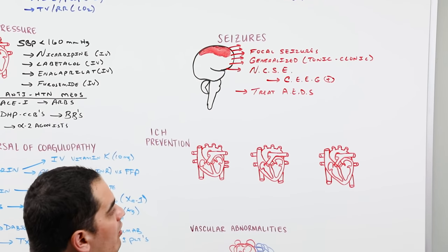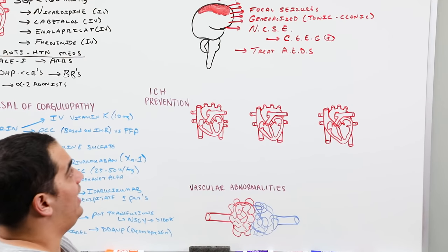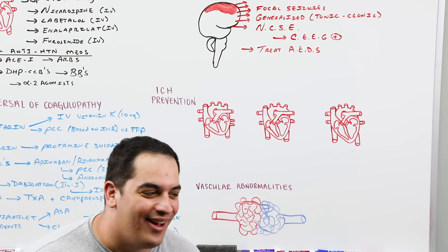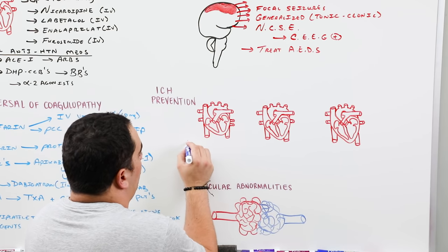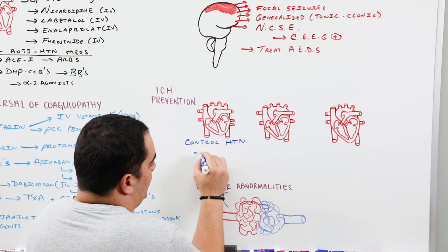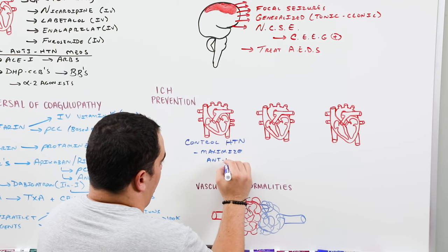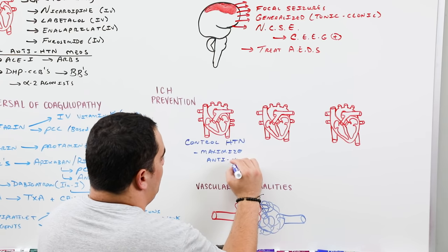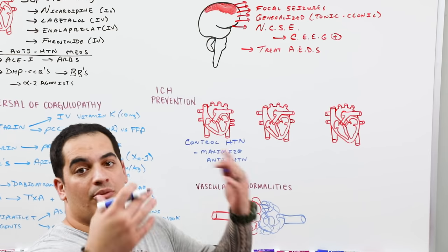For ICH prevention, the most important step is controlling hypertension — the most common cause of ICH — by maximizing antihypertensive medications to keep blood pressure lower and prevent recurrent bleeds.